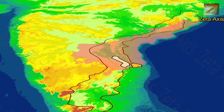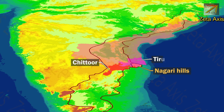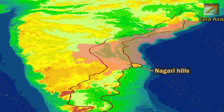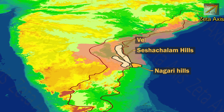Tirupati, a major Hindu pilgrimage center, is also located in the Seshachalam hills. Next are the Nagari hills, which are small hills located in Chittoor and Tirupati districts of Andhra Pradesh, south of the Seshachalam and Velikonda hills.